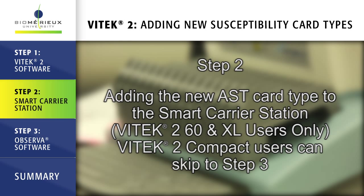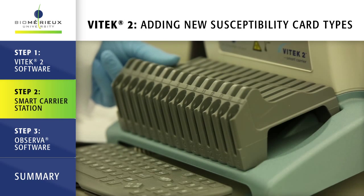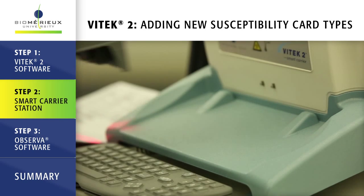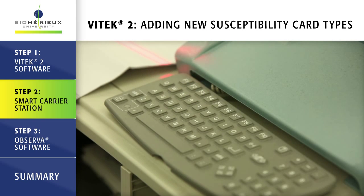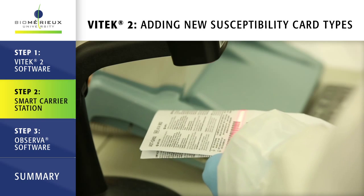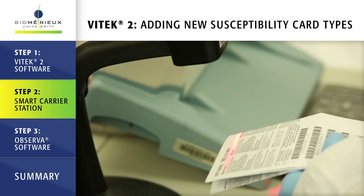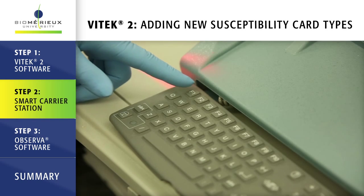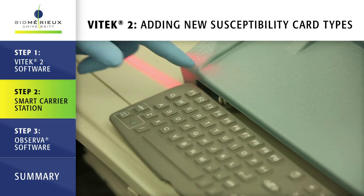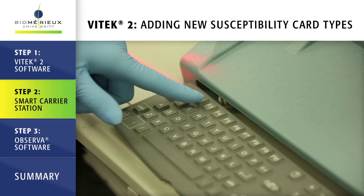Step 2: Adding the new AST card type to the smart carrier station. Vitek 2 compact users can skip to step 3. Remove any cassettes from the smart carrier station. Press F6 on the SCS keypad. Scan in the first and second barcodes found on the back of the AST card package insert. Click F1 to save. Click F2 to exit.